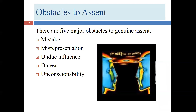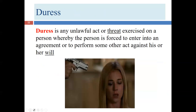Duress is probably the most straightforward of these obstacles. Imagine I have a dry erase marker and I ask Bob if he'll pay $50 for it. Bob says no — he can buy one for less than a dollar. Then I pull out a knife or gun and ask whether he's thought about it more carefully. With a weapon pointed at his head, Bob says yes, $50 is a great deal, and he reaches into his wallet and pays me $50 for the marker.